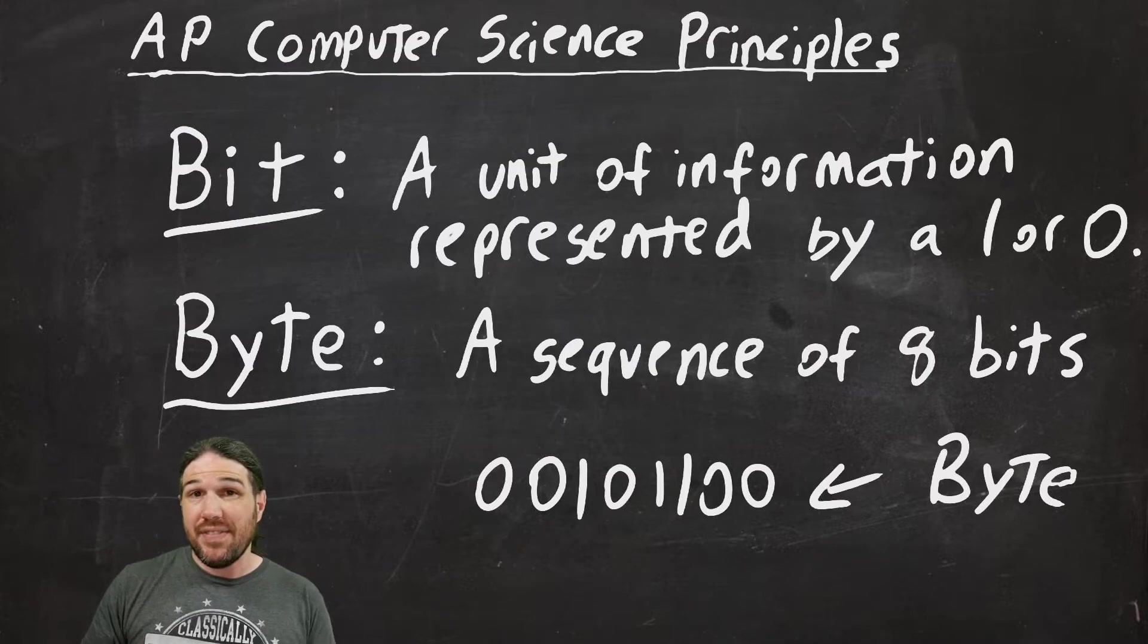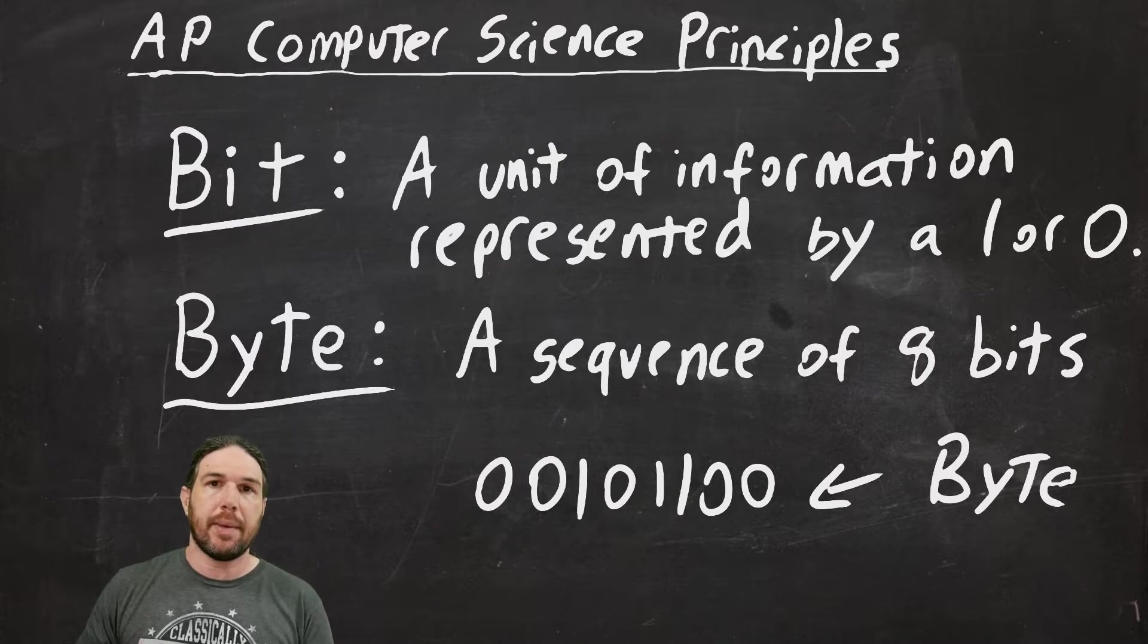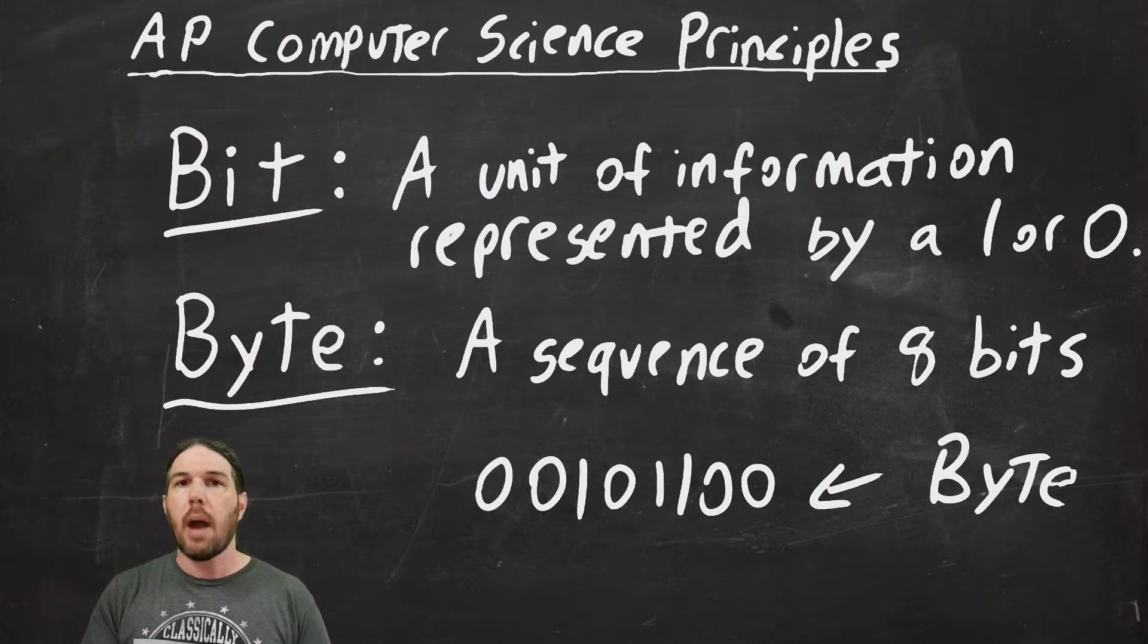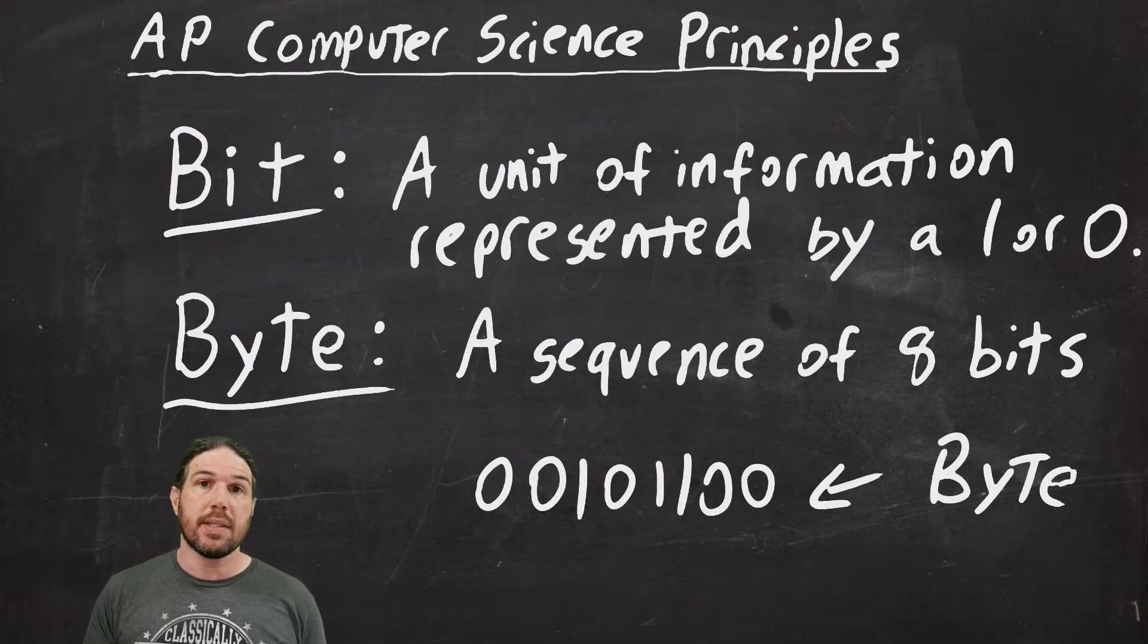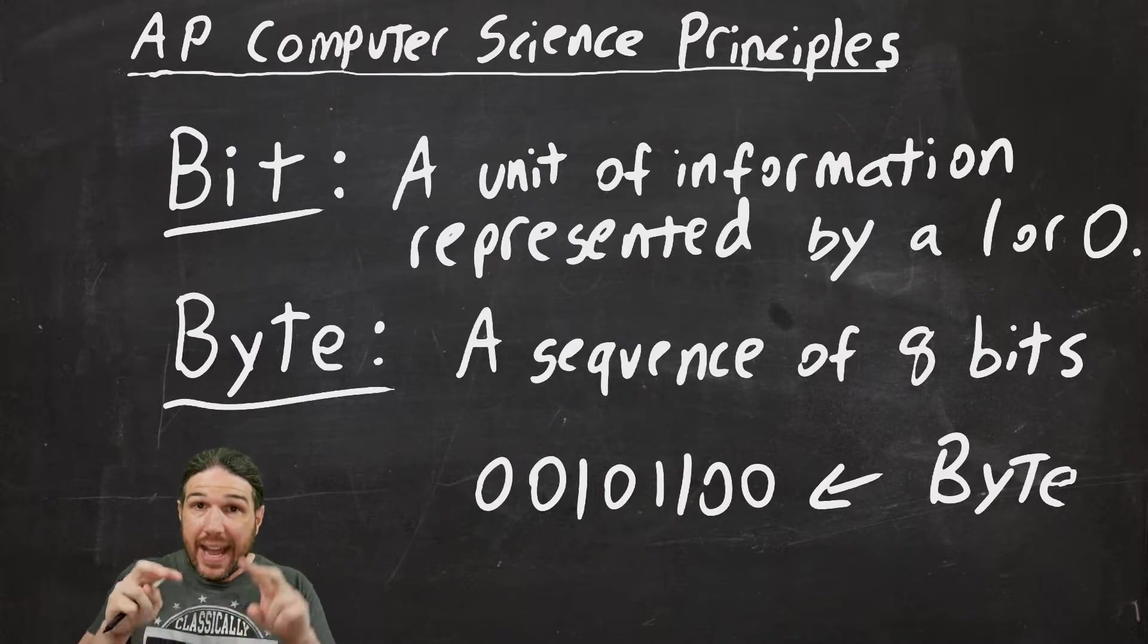We are going to learn in this class how we can use programming languages to turn ones and zeros into text or images or sounds or even movies. But of course, the more complicated the thing you're trying to make, the more ones and zeros it takes to represent it. Each computer then takes those strings of ones and zeros and translates them into something that we can see and hear and type.